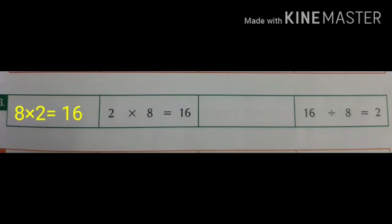Now coming to the division facts. The first division fact will be 16 ÷ 2 = 8, and the next one is given for you: 16 ÷ 8 = 2. In this way you have to solve this type of multiplication and division facts.